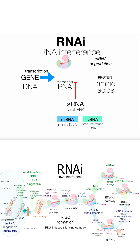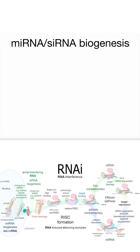Upon binding, Argonaute is then going to be able to reduce the levels of the protein that gets made. The way that it does this depends on the source of that small RNA and the amount of complementarity.